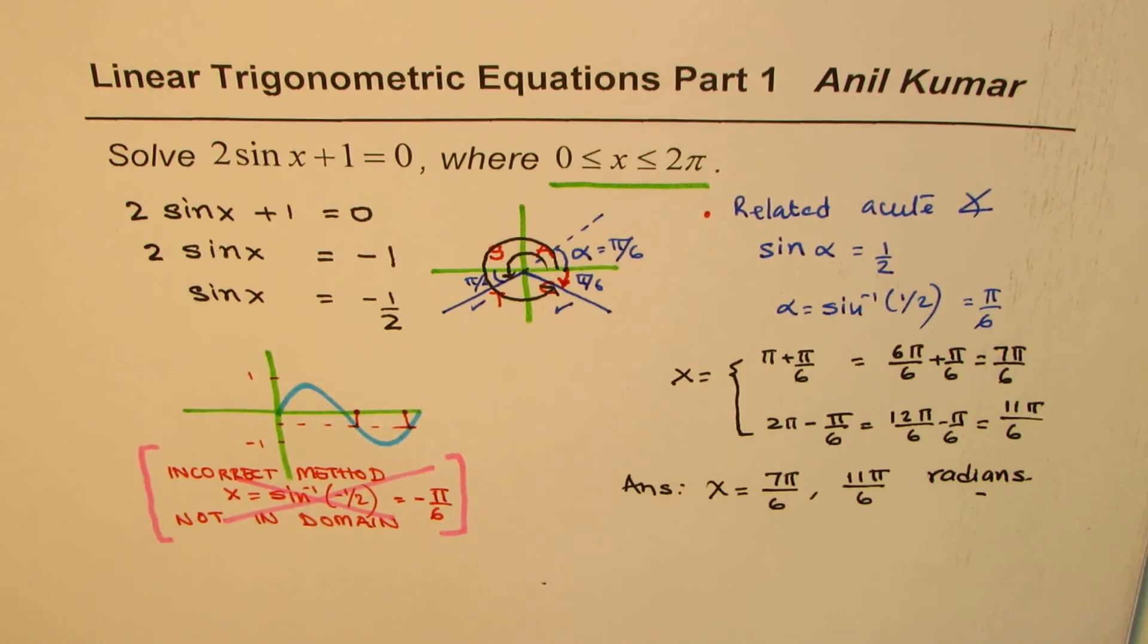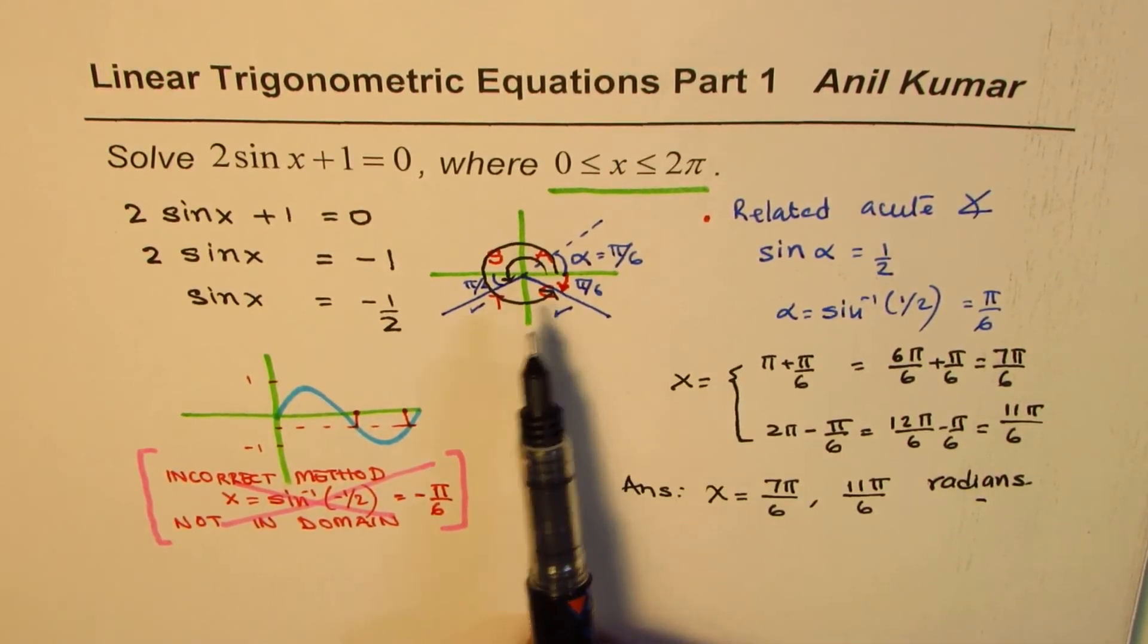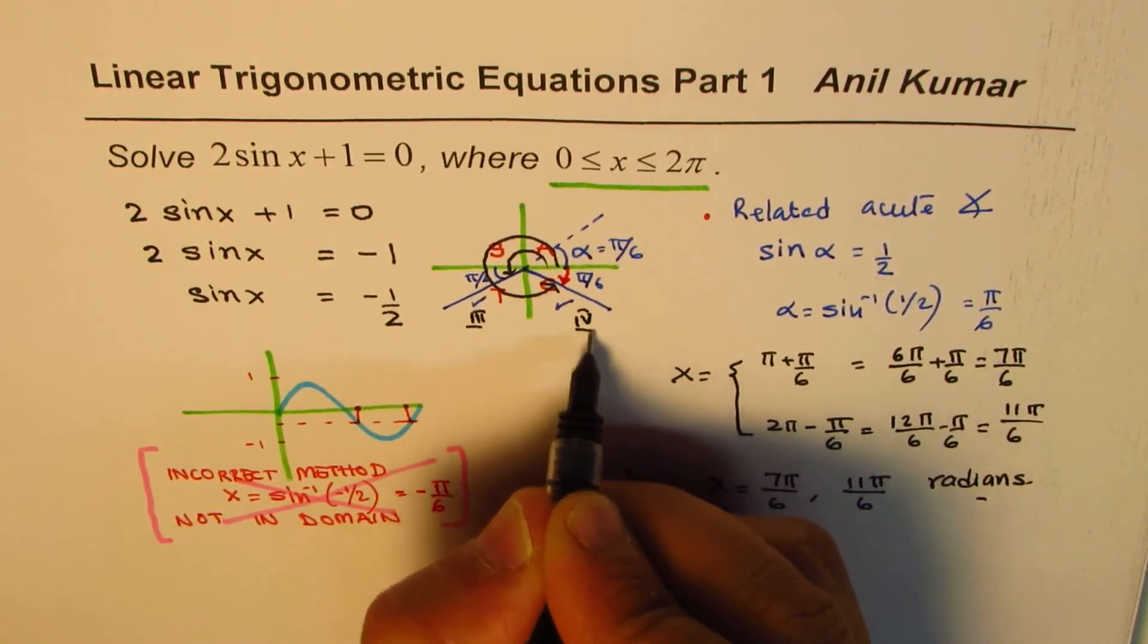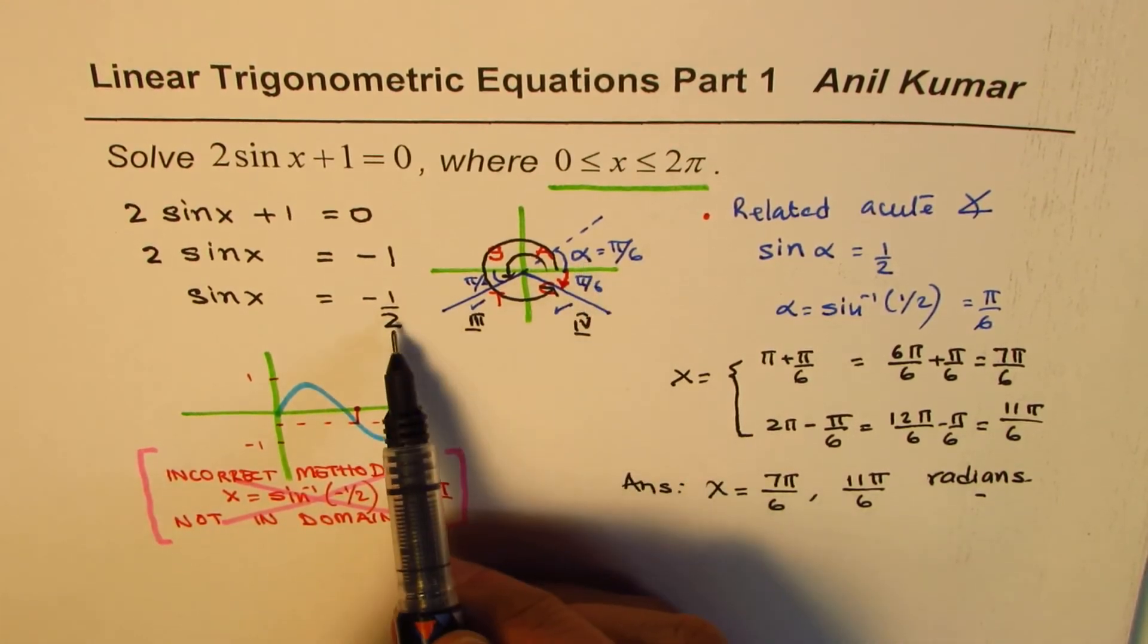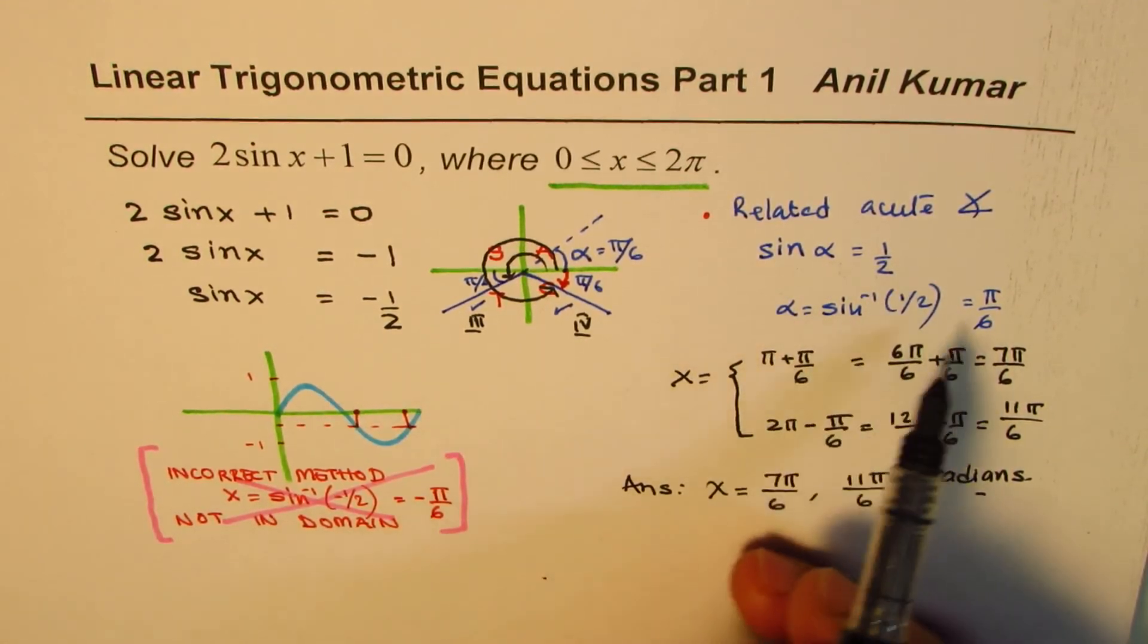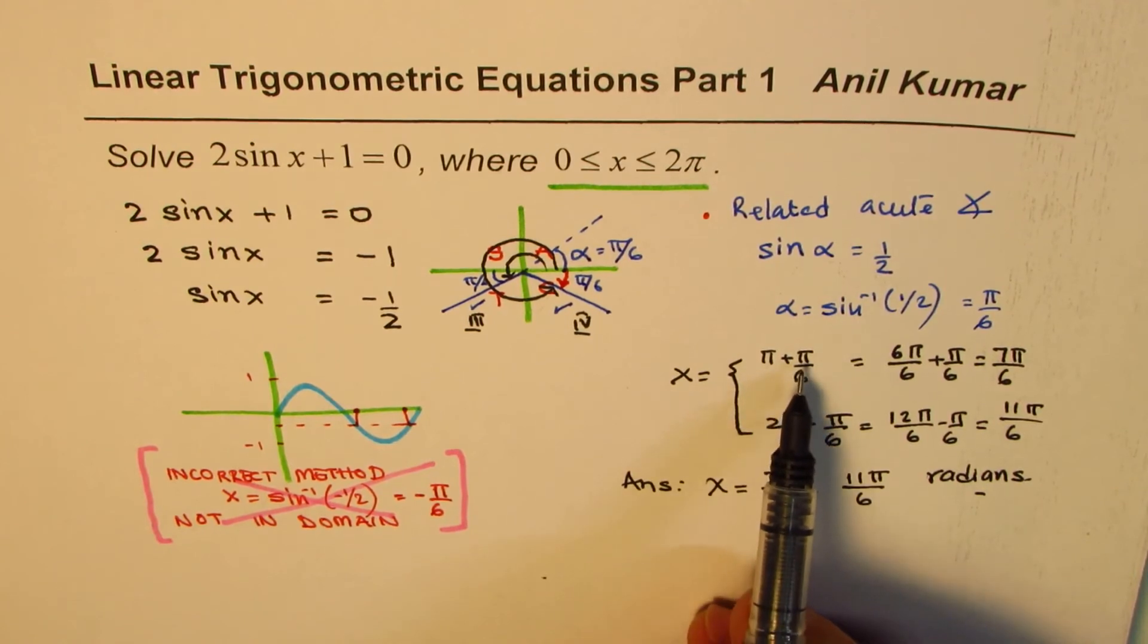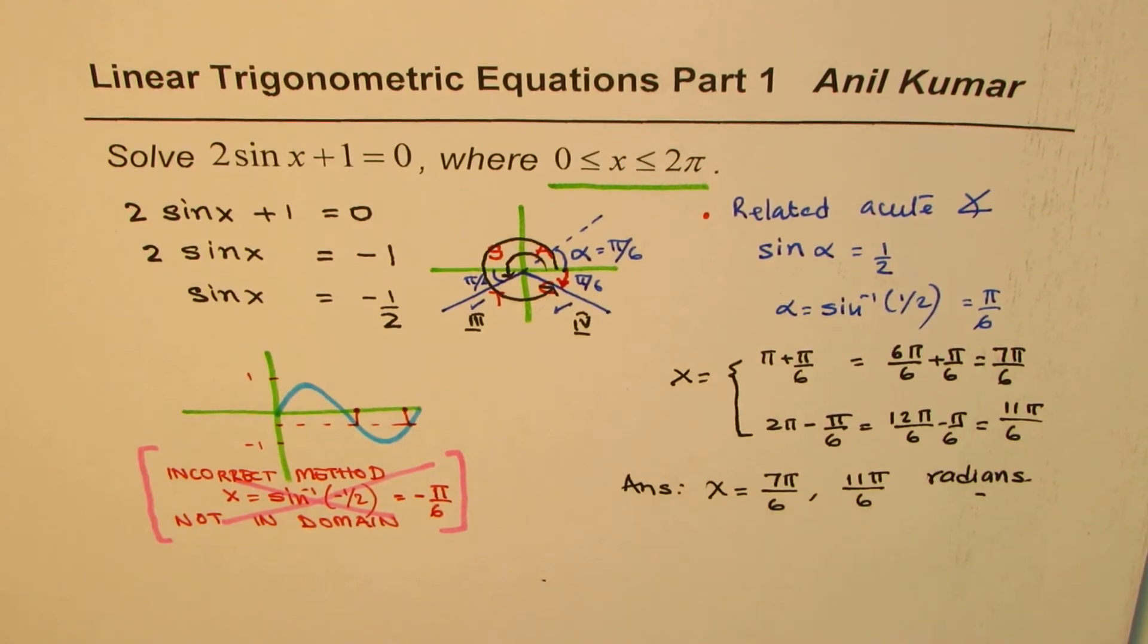So that is how you actually get the solution. So the idea is, first figure out how many solutions are there. Since we are working with a negative value of sine, we also know that these solutions are in quadrant 3 and in quadrant 4. To begin with, find the related acute angle, which satisfies the absolute value of sin(x), which is 1/2. Once you find that angle, then write down the principal angles for the two solutions. In this case, they are π plus the acute angle and 2π minus the acute angle. That gives us 7π/6 and 11π/6.